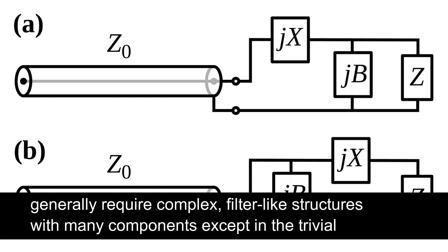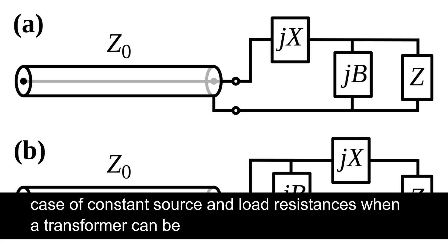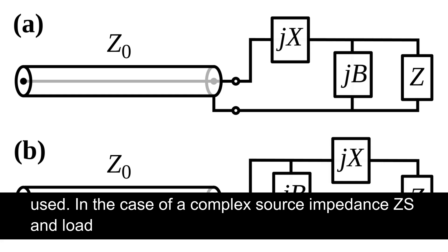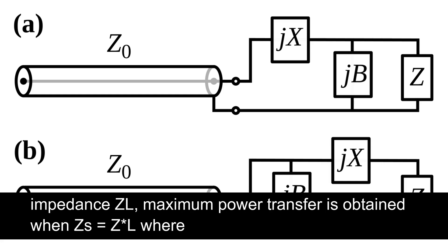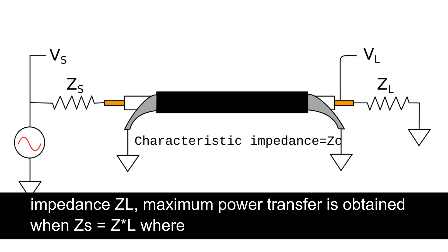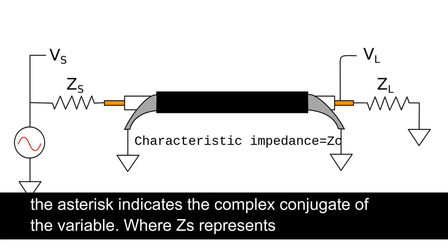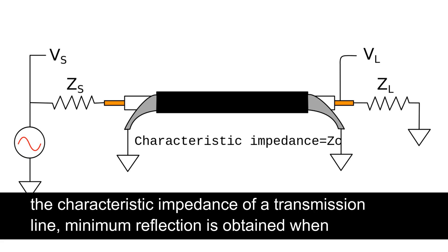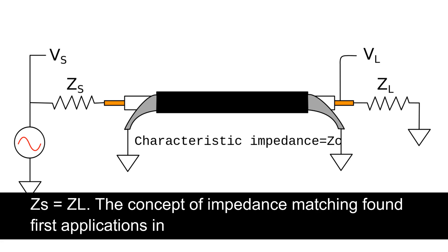Impedance matching over a wide band will generally require complex, filter-like structures with many components, except in the trivial case of constant source and load resistances when a transformer can be used. In the case of a complex source impedance Zs and load impedance Zl, maximum power transfer is obtained when Zs equals Zl*, where the asterisk indicates the complex conjugate of the variable. Where Zs represents the characteristic impedance of a transmission line, minimum reflection is obtained when Zs equals Zl.